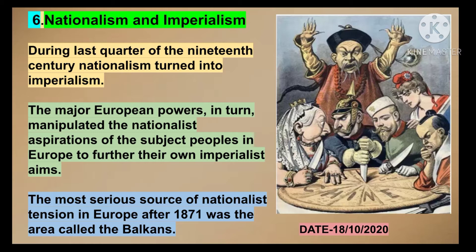Let's come back to our topic — nationalism and imperialism. As I said, during the last quarter of the 19th century, nationalism turned into imperialism. Major European powers started manipulating nationalist feelings so that they could achieve their aim of imperialism. Now, there was actually one area where the European powers wanted to establish their power by hook or by crook, and that area was the Balkans. The most serious source of nationalist tension in Europe after 1871 was the area called the Balkans.